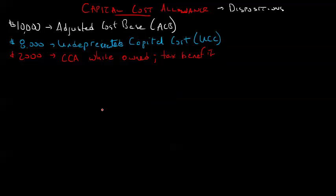Now there are three different things that could happen here. We'll work through three different scenarios. In scenario number one, let's say that we sell it for more than the UCC. We sell it for $8,500, just a touch more than the UCC.